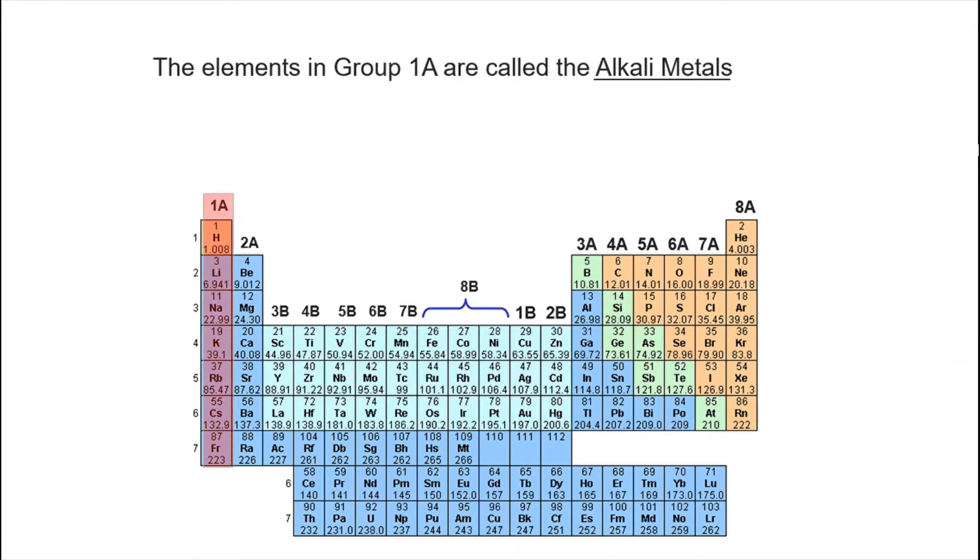Some of the groups have particular names. For example, elements in group 1A are called the alkali metals. Now hydrogen, although it's in group 1A, it is not a metal. That zigzag line that I mentioned earlier actually runs underneath hydrogen, so hydrogen is actually a non-metal.